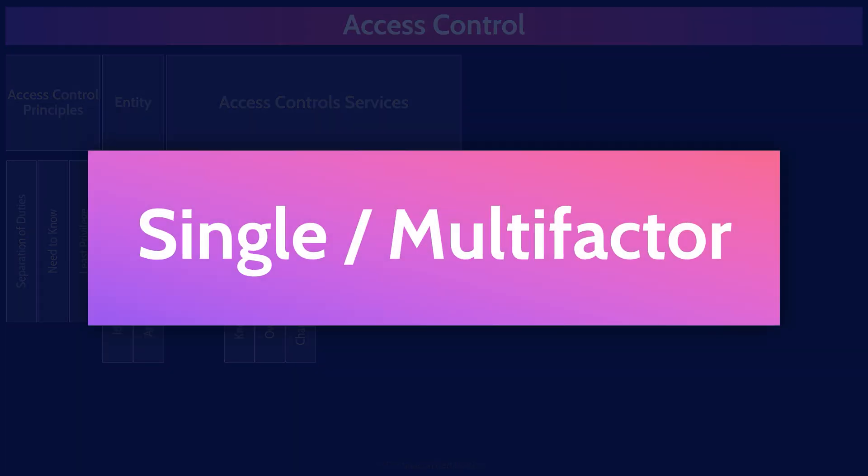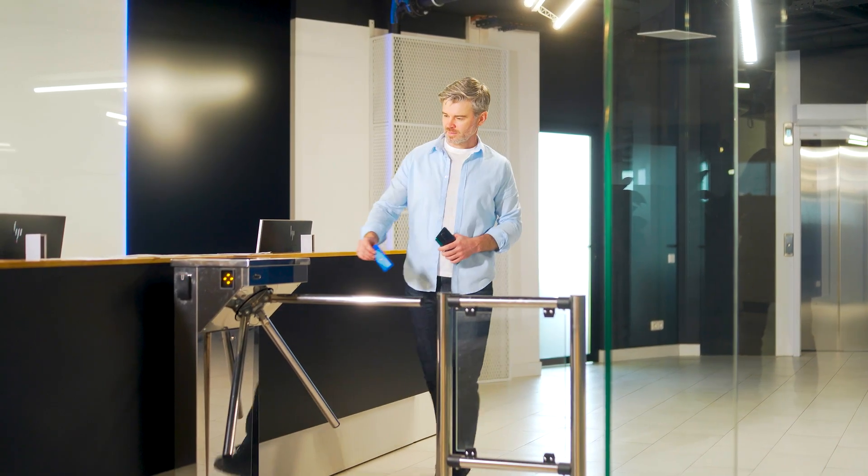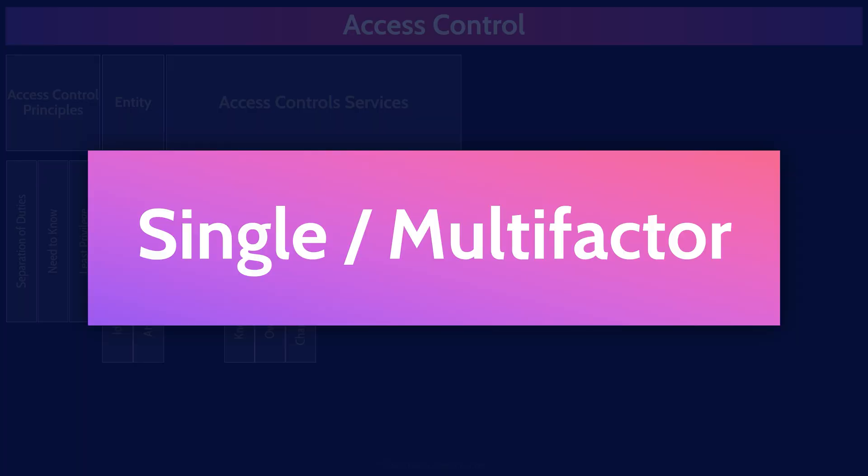We've now discussed the three factors of authentication: knowledge, ownership, and characteristic. Single factor authentication is simply using one of these factors — logging in with just a password, or accessing a building by scanning your retina. Multi-factor authentication means using two or more different factors. Logging in with a password and a one-time password from an authenticator app is MFA. However, entering a password and answering a security question is not MFA — both are authentication by knowledge, the same factor. Watch out for that on the exam.